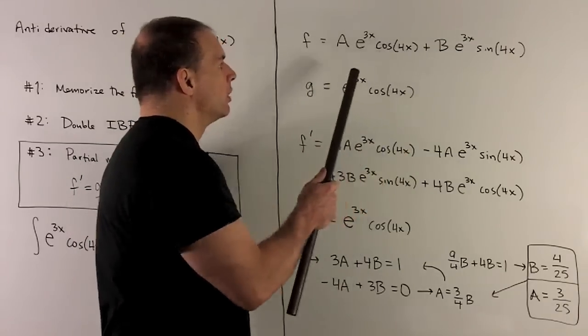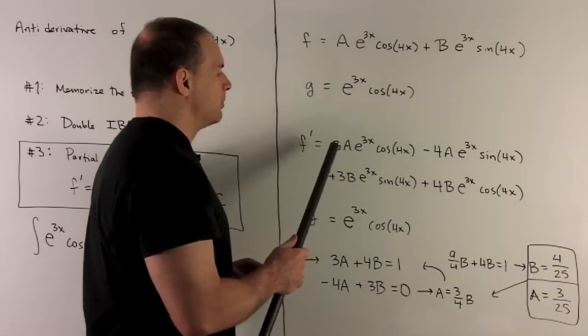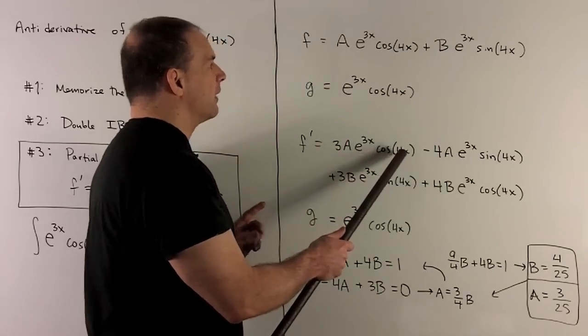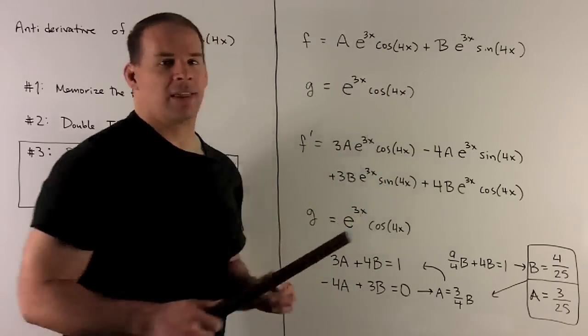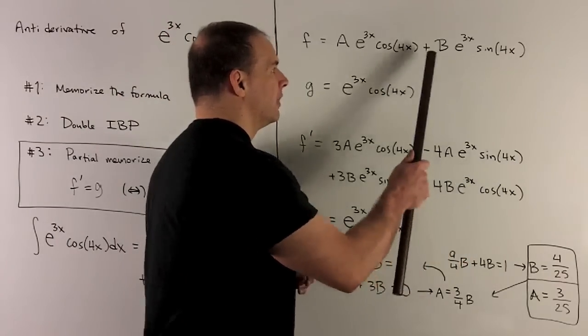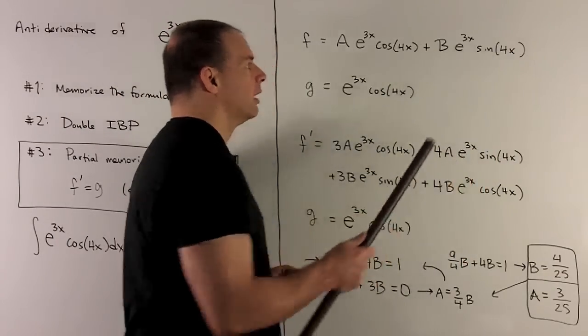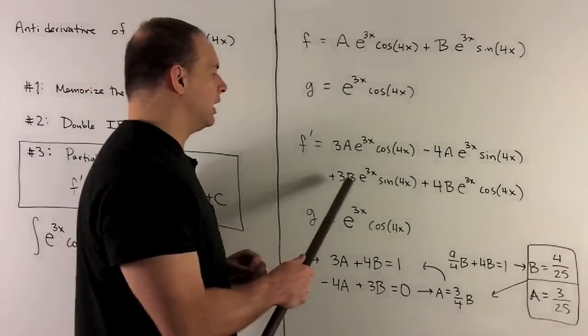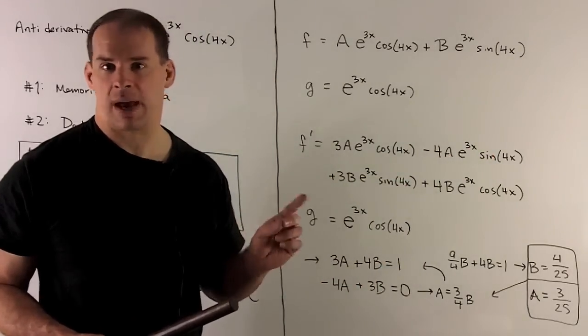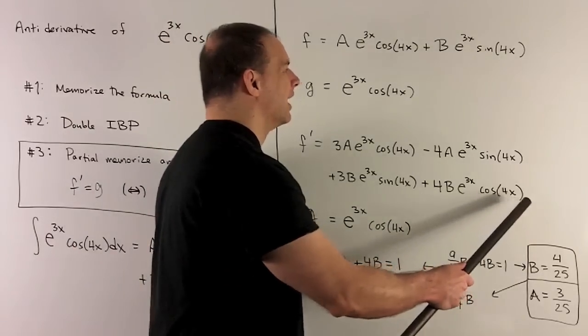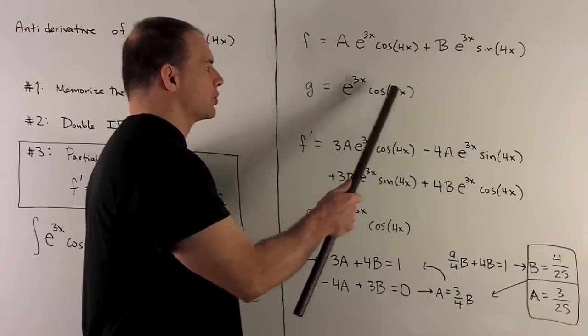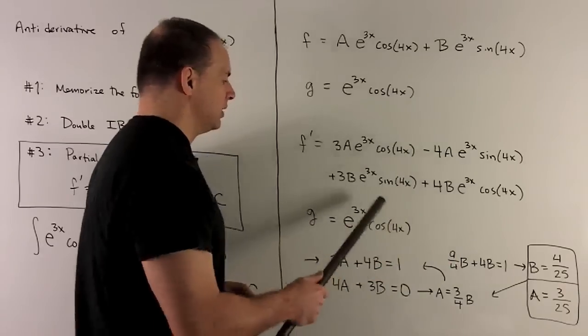Take derivative of the first term. First part, e to the 3x becomes 3e to the 3x, and then we pick up our cosine 4x. If I take derivative of cosine 4x, that becomes minus sine of 4x times 4. That'll give us this term. For our product rule here, we're going to do the e to the 3x, so it's going to become a 3e to the 3x. Derivative of sine 4x is going to give me cosine 4x and then times 4. We're just going to set that equal to g. So, it's going to be equal to e to the 3x cosine 4x. We'll have this is equal to this.